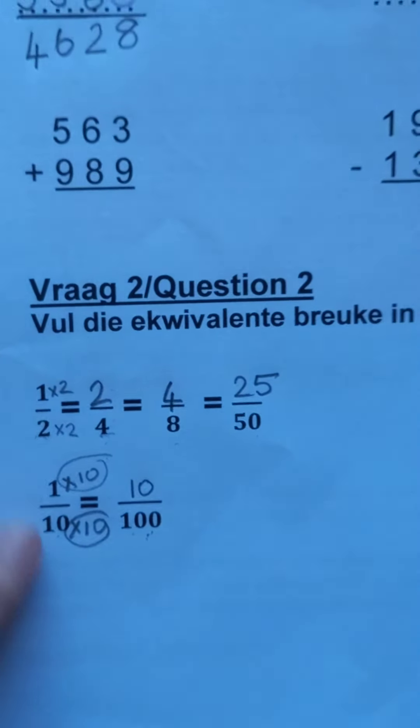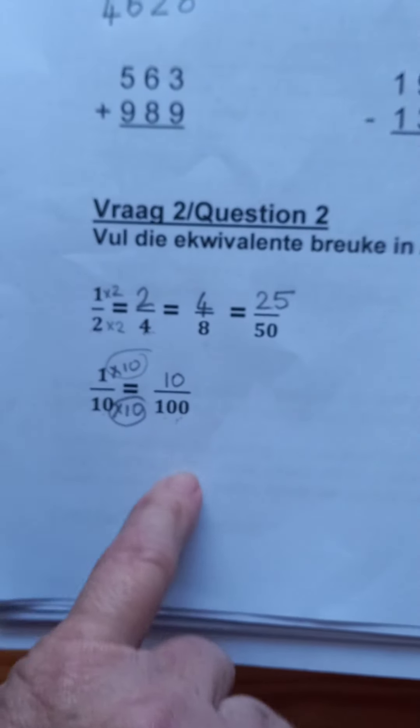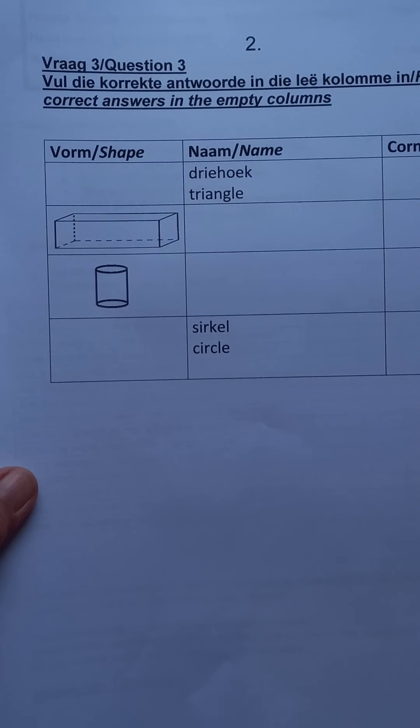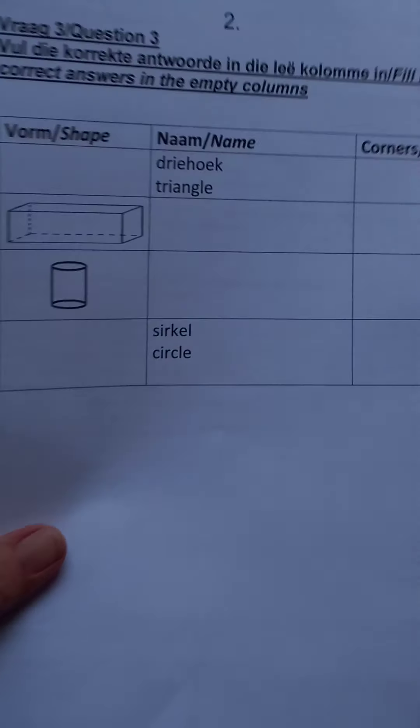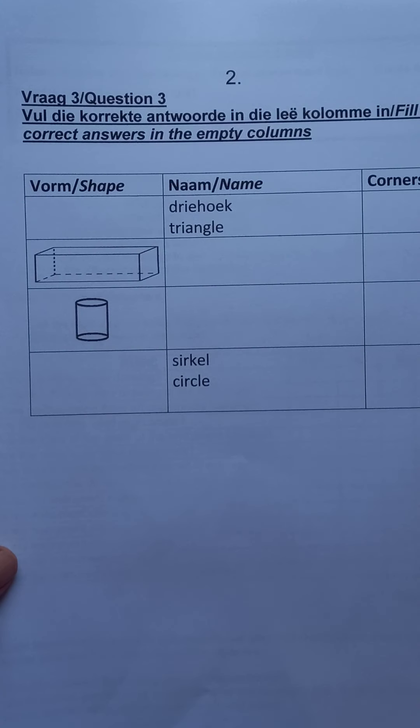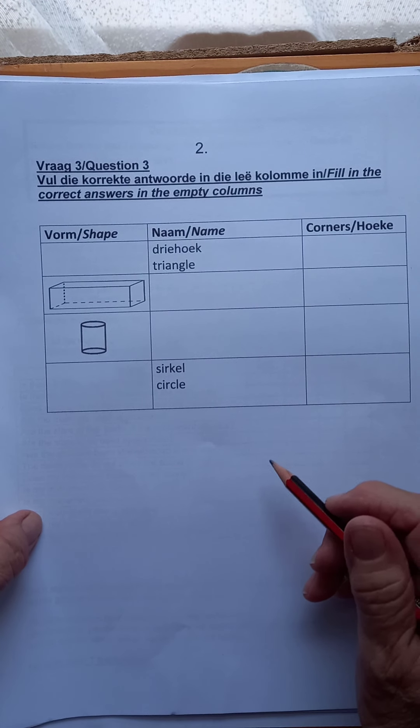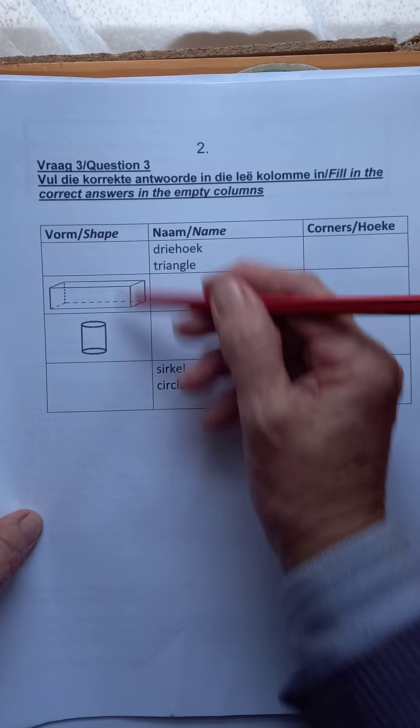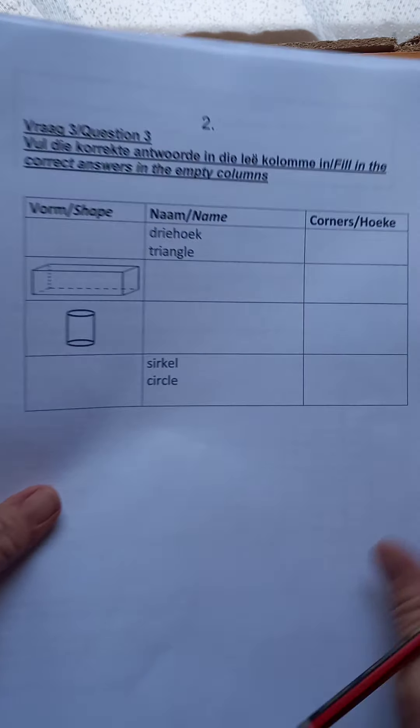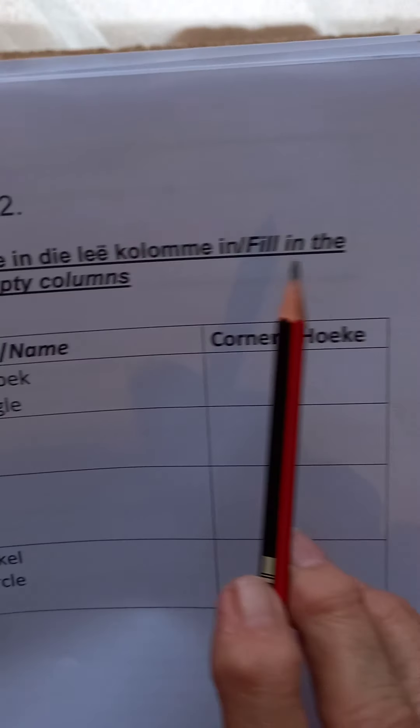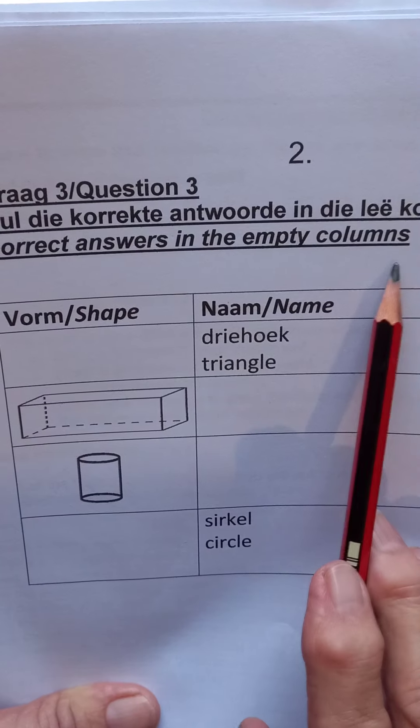Now we're going to do page two. We have the shapes here and this is the way I'm going to ask the shapes in the test. There will be a few, not a lot. I'm not going to ask all and I'm not going to ask the same ones, but if you look at this block, they say you must fill in the correct answers in the empty columns.